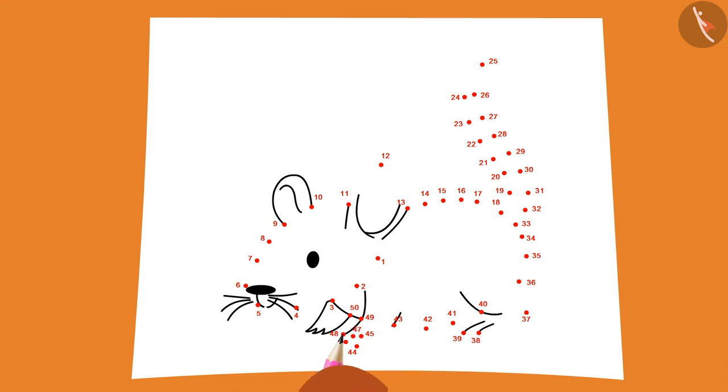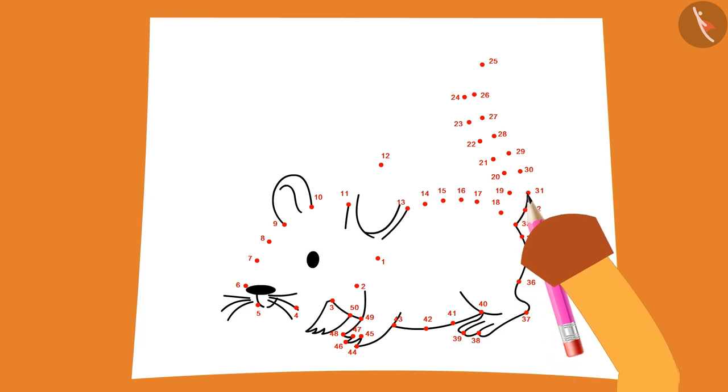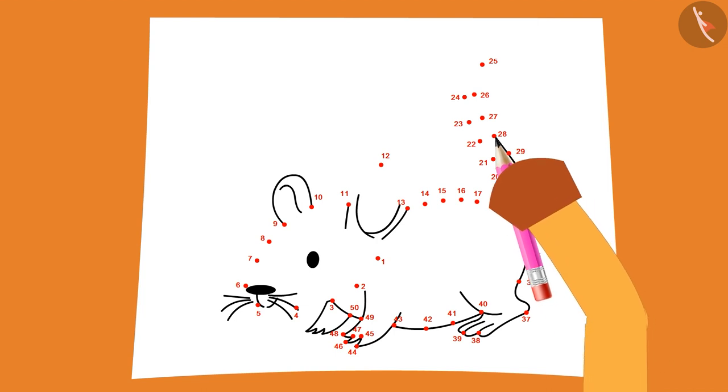Gaffey starts counting backwards to join the dots. 50, 49, 48, 47, 46, 45, 44, 43, 42, 41, 40, 39, 38, 37, 36, 35, 34, 33, 32, 31, 30.